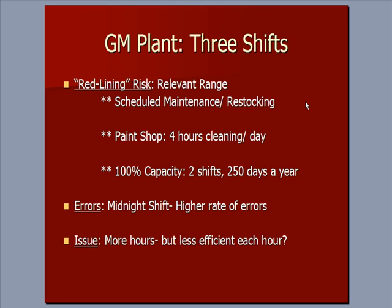For example, what's needed in this GM auto plant is a certain amount of time for scheduled maintenance of equipment, restocking parts going onto cars, and other tasks. We need to pause the assembly line to do things other than make cars. Specifically, the paint shop requires four hours of cleaning per day in total to maintain the equipment that paints the cars.